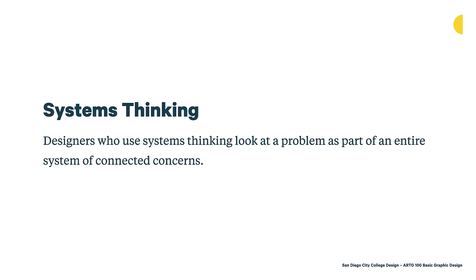Another thing to think about is systems thinking. Designers who use systems thinking look at a problem as part of an entire system of connected concerns. Although you're only designing single compositions for each emotion, sometimes you can create systems thinking within that piece — almost a little narrative storytelling with the shapes within that square. More importantly, this applies to larger projects where designs are carried out across multiple substrates or packages.